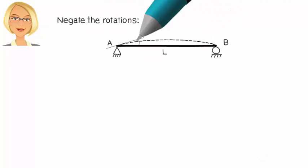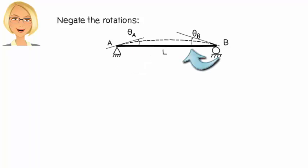Then, we negate the rotations. This means the clockwise rotation at A becomes counter-clockwise and the counter-clockwise rotation at B becomes clockwise. This gives an upward deflection to the beam, like this.